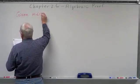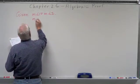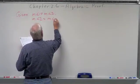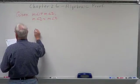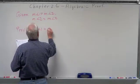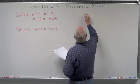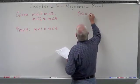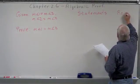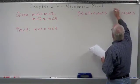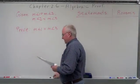Given: measurement of angle 1 equals measurement of angle 2. I'm going to stack my givens. Measurement of angle 2 equals measurement of angle 3. Prove: measurement of angle 1 equals measurement of angle 3. So I've got statements and reasons. Now let's draw a little picture here.